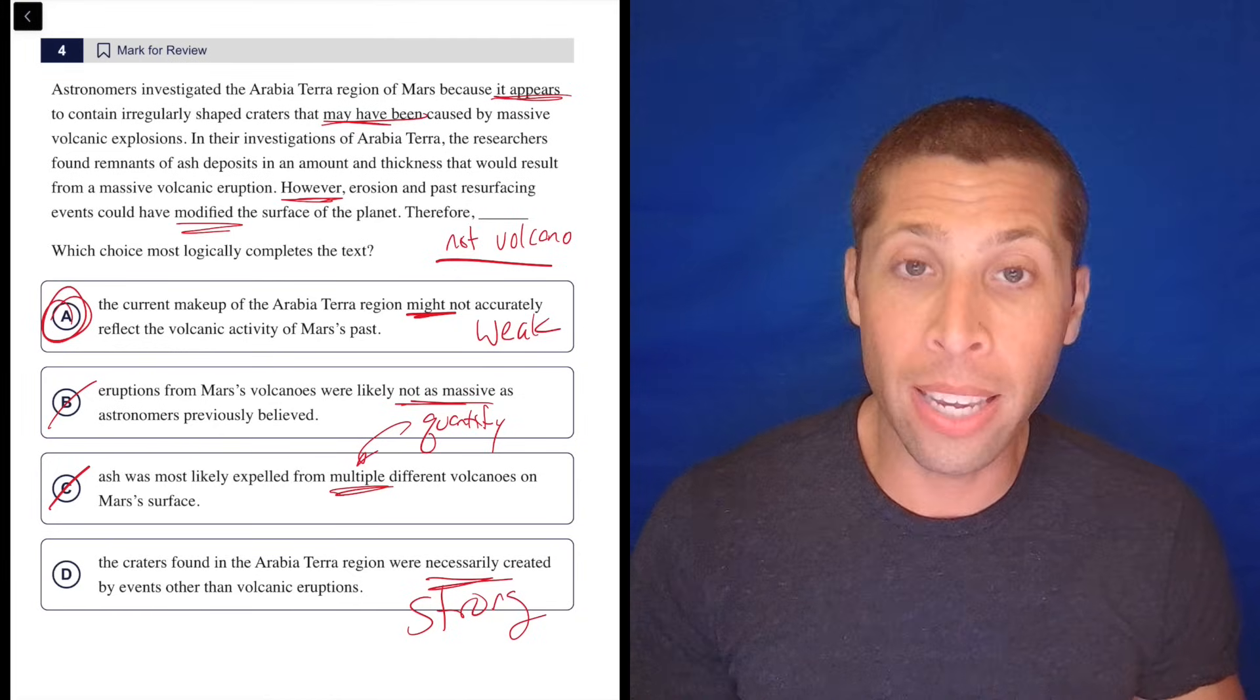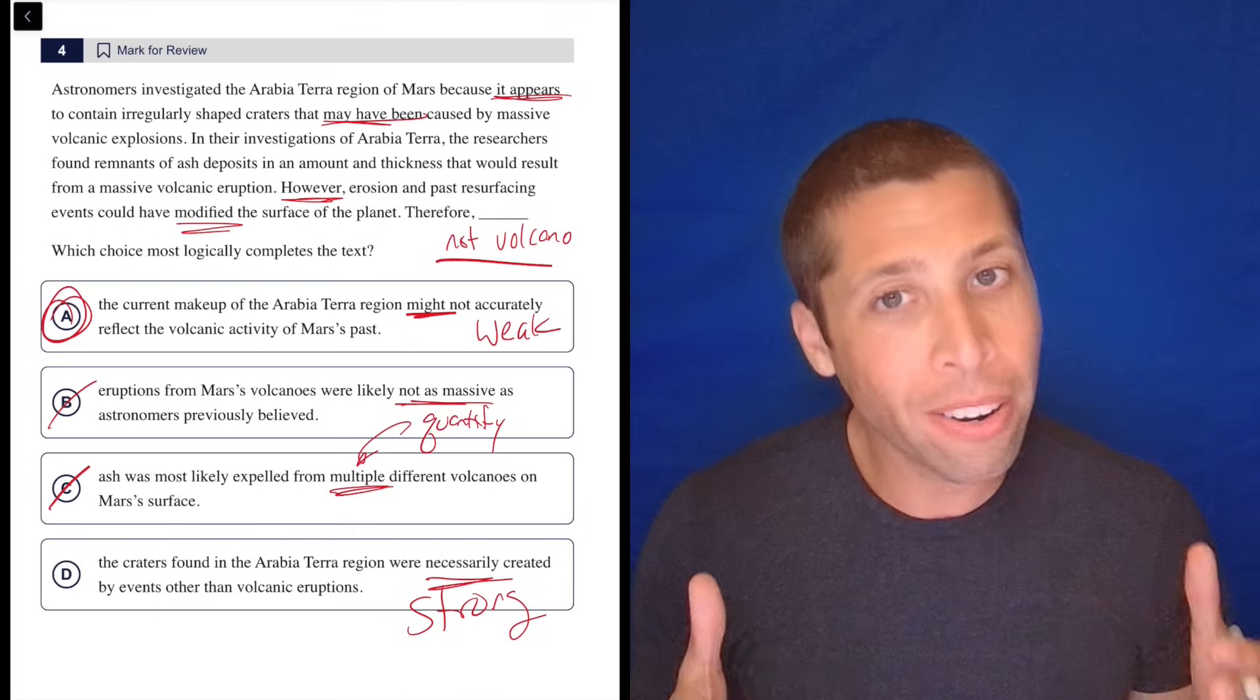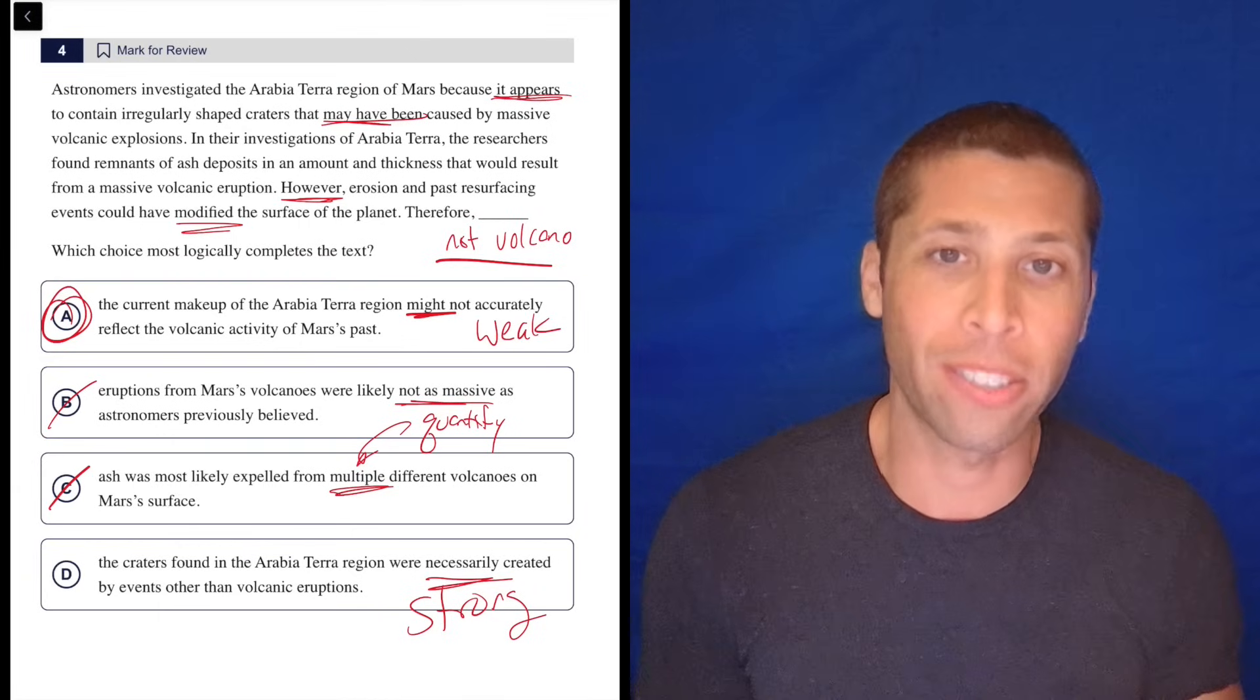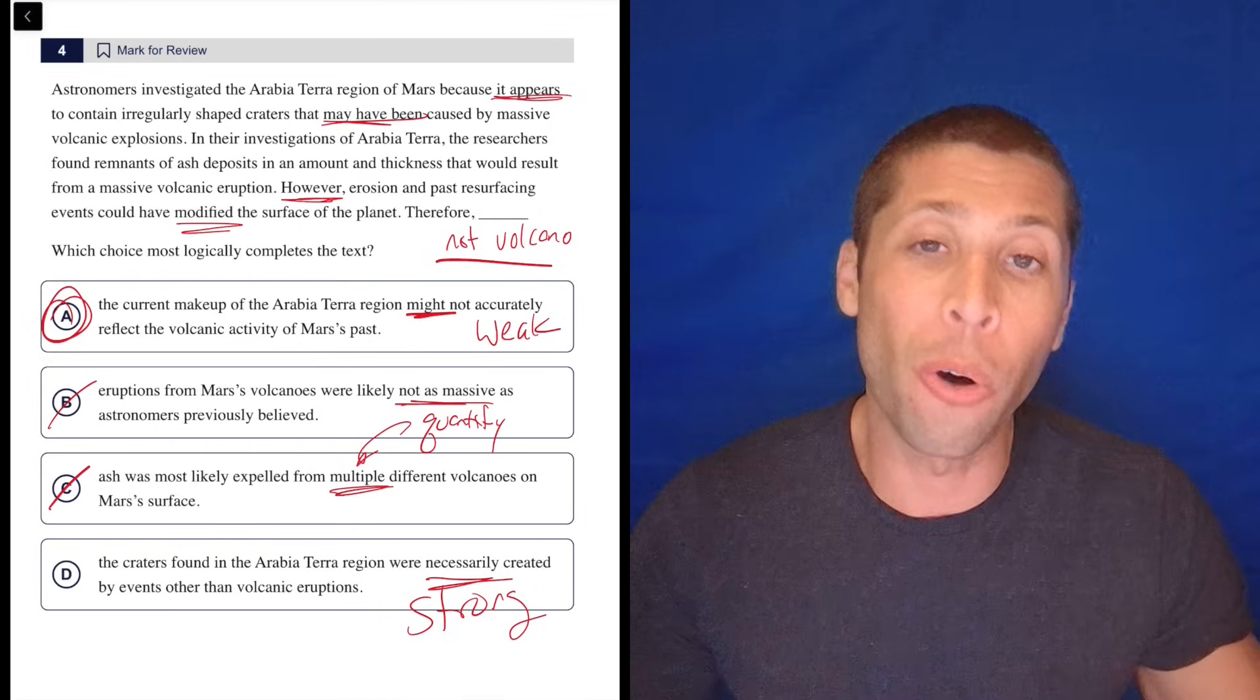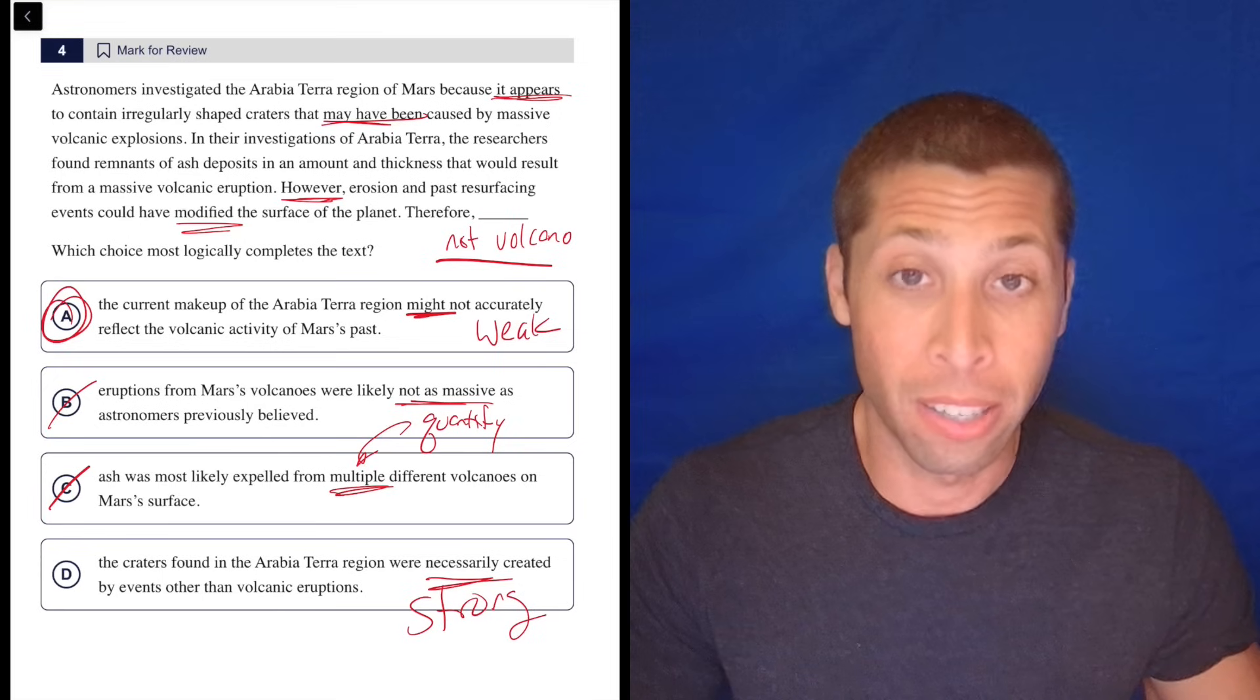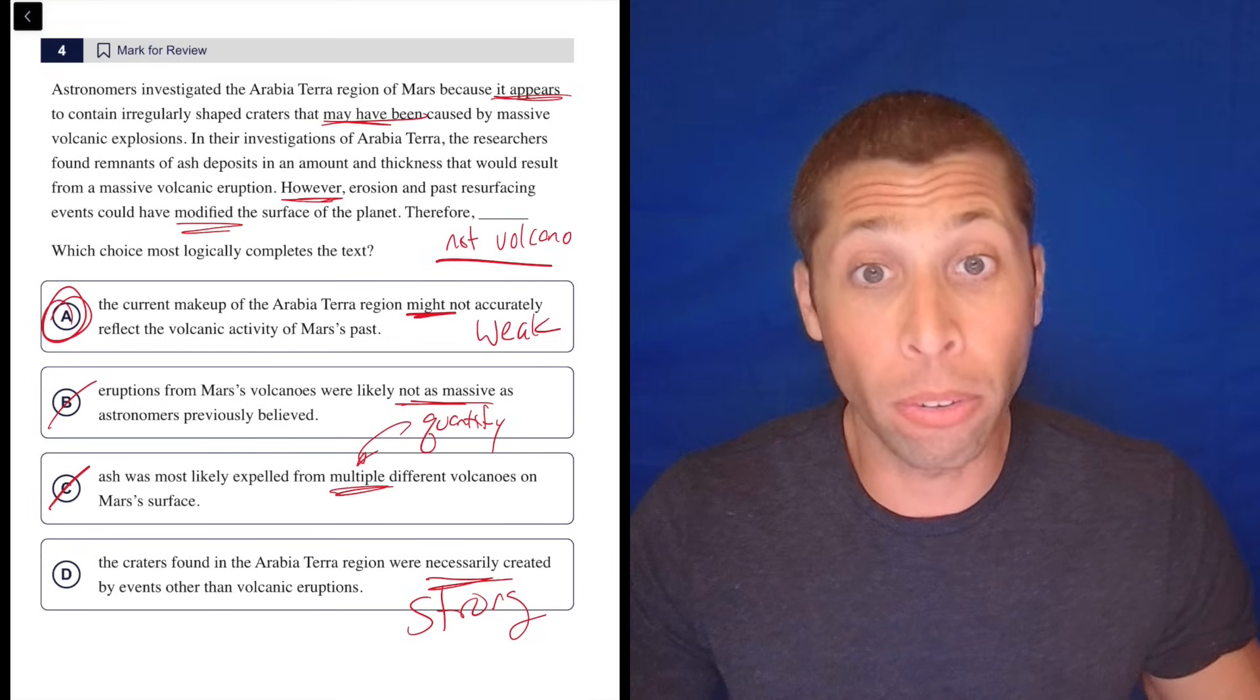I think if you picked D, it's a sign that you do not understand how the SAT works. And hopefully now you do and you can know that when you are choosing between two answers that are left, you're better off going with the weaker one.